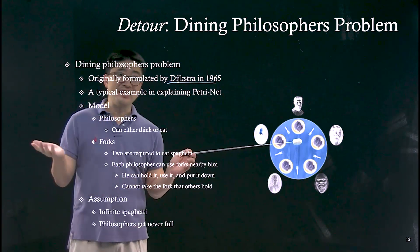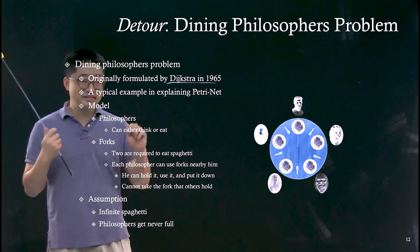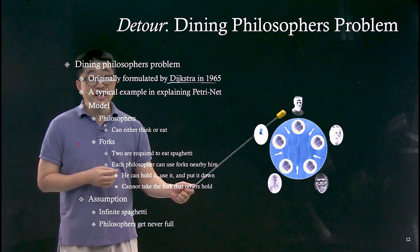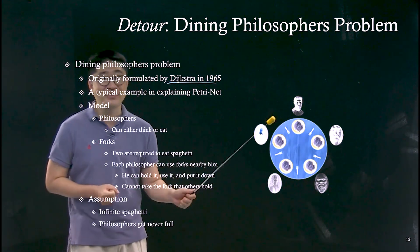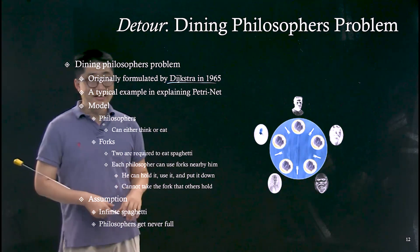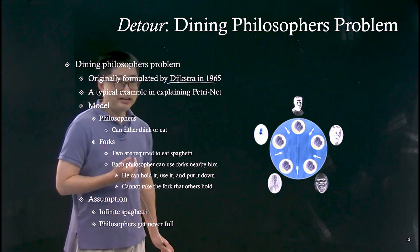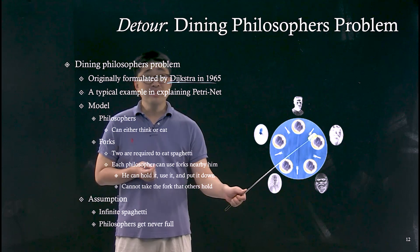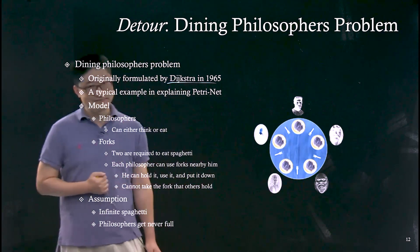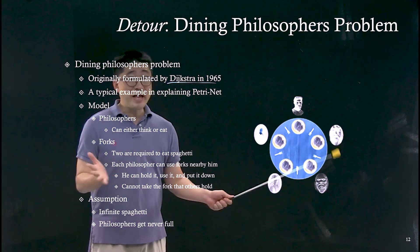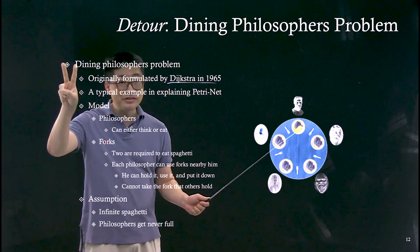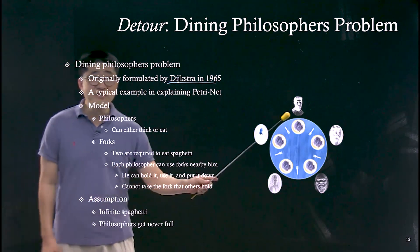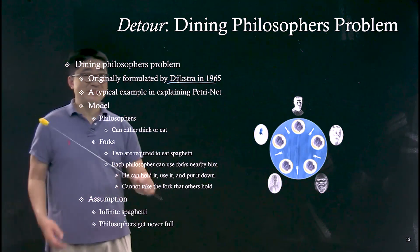The model scenario is this: we have five philosophers who want to eat spaghetti. These philosophers must think when they are not eating, and when they are eating they are not thinking — so they are either in a thinking state or eating state. To eat spaghetti, they require two forks. The forks are shared among five philosophers, giving us five forks total, and there is an infinite supply of spaghetti.